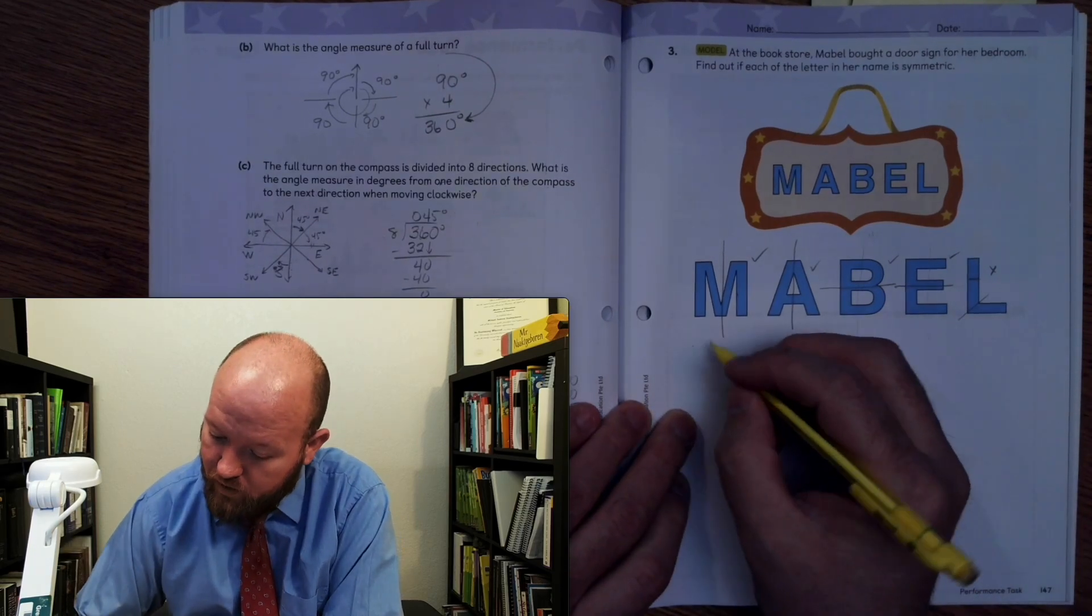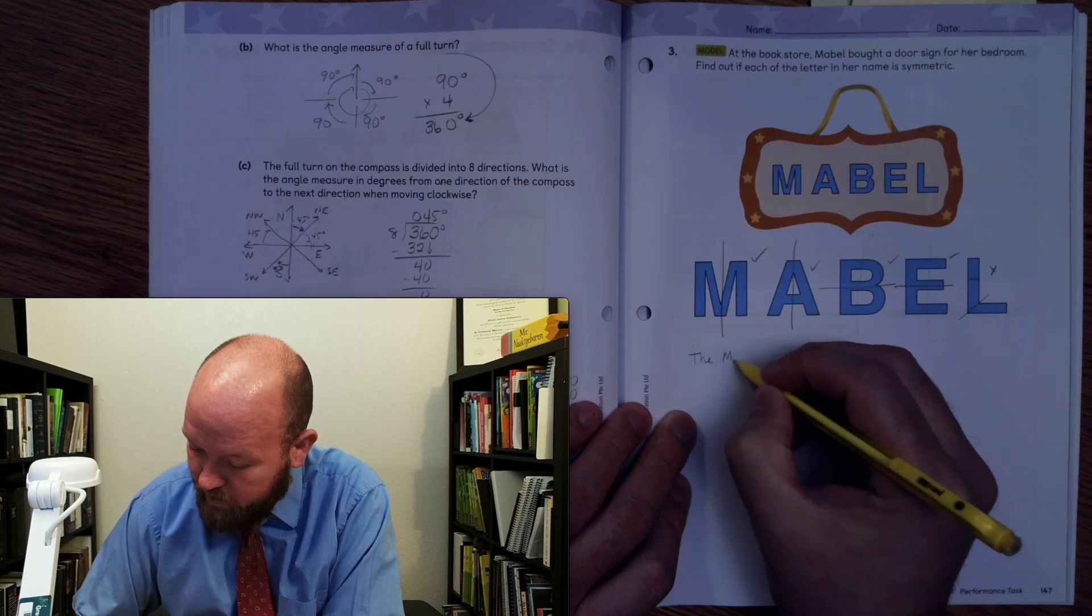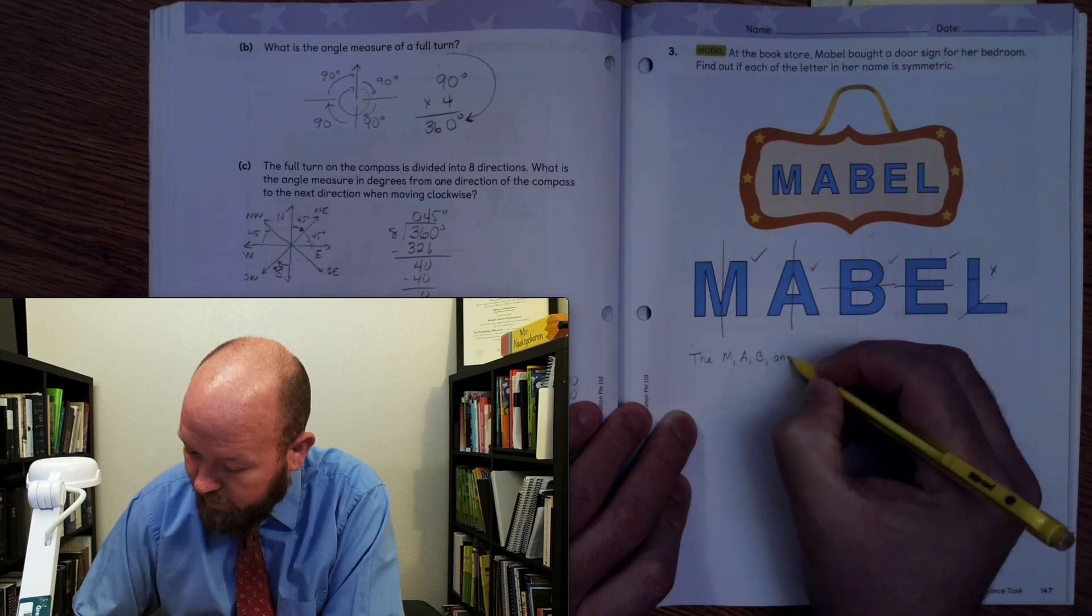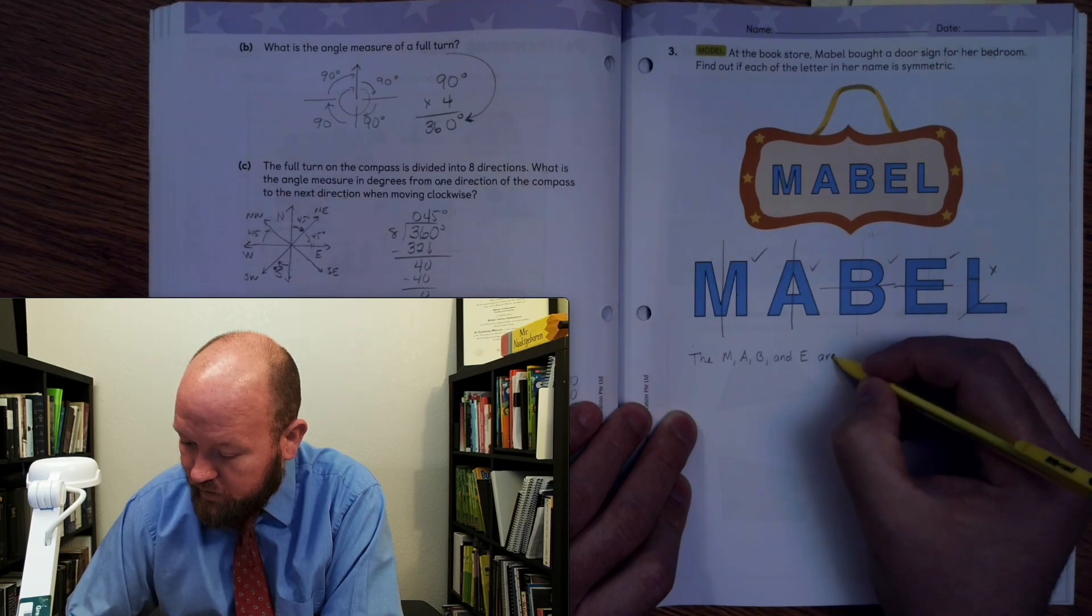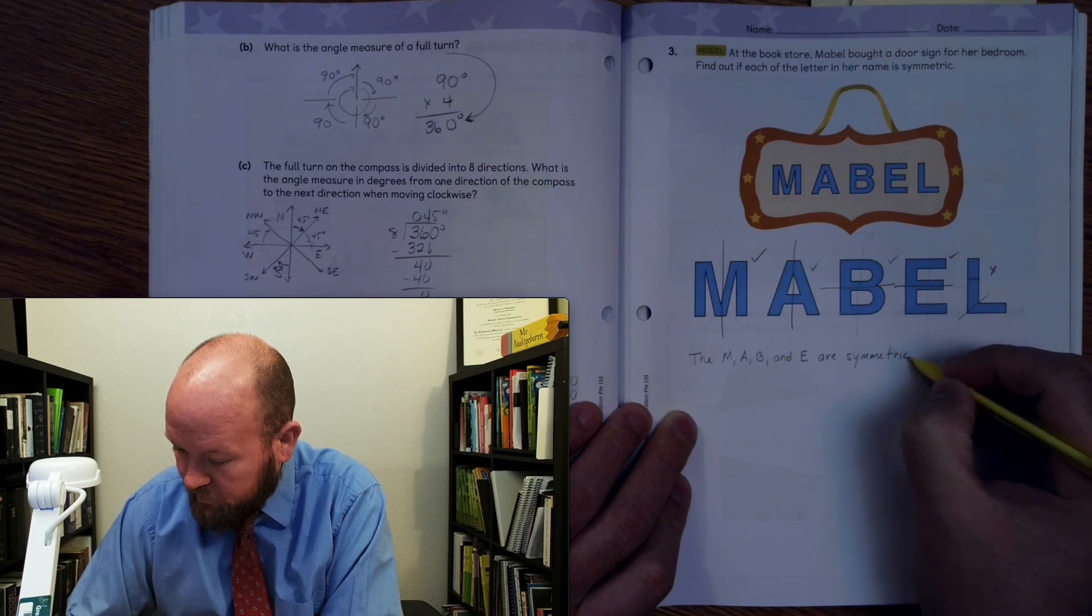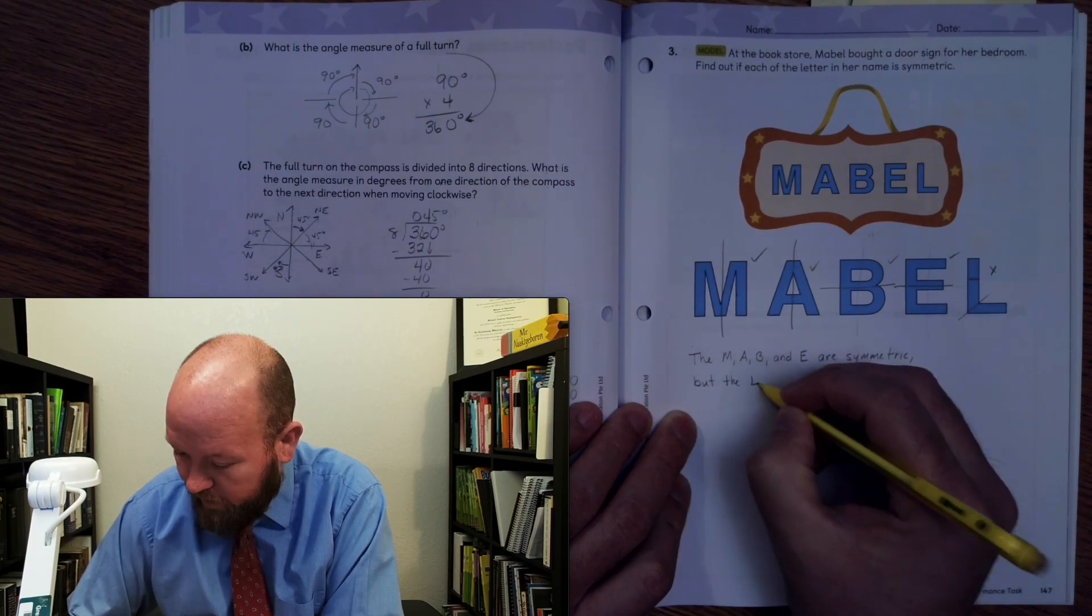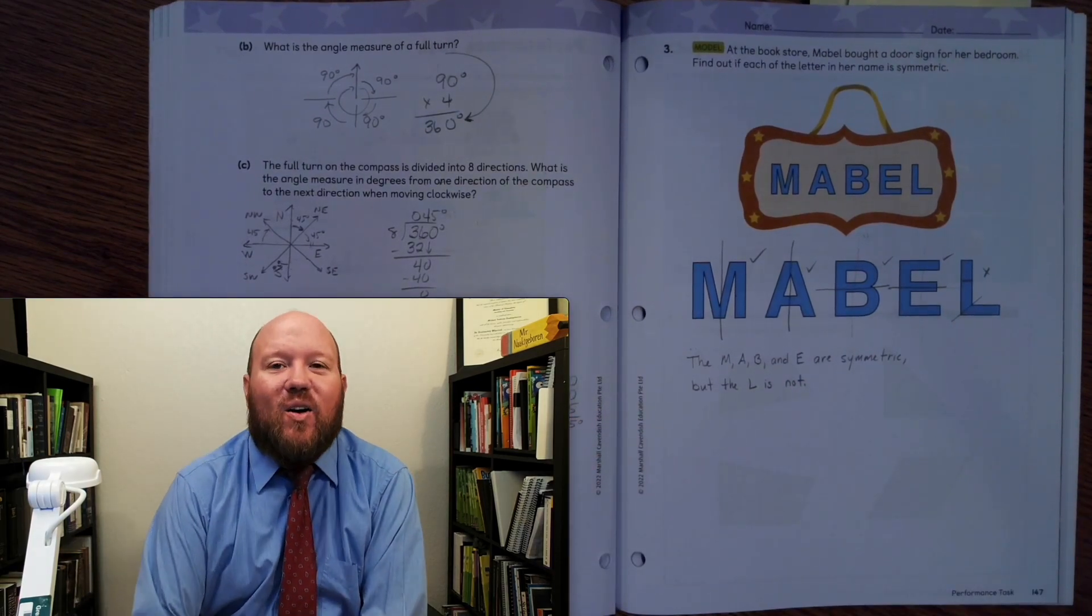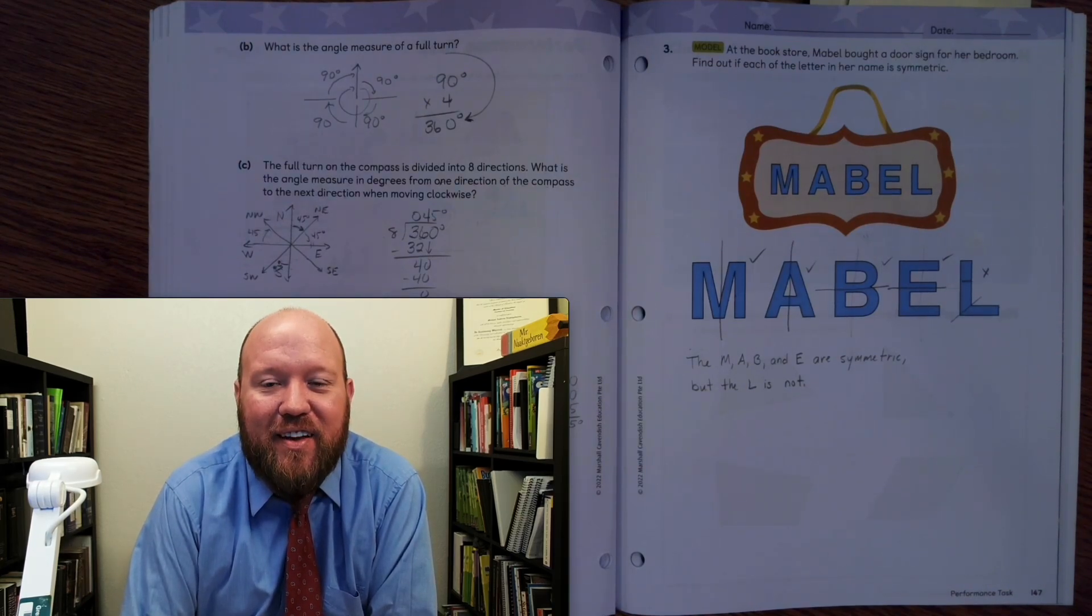All right. So the M, A, B, and E are symmetric. But the L is not. All right. Well, that is the end of our lesson for today. I hope you have a terrific day. And I look forward to see you next time.